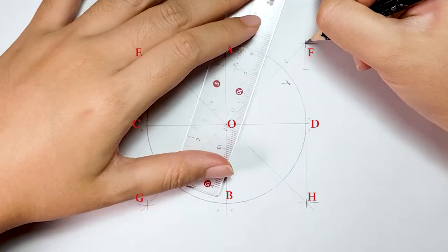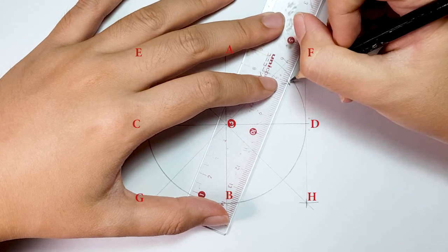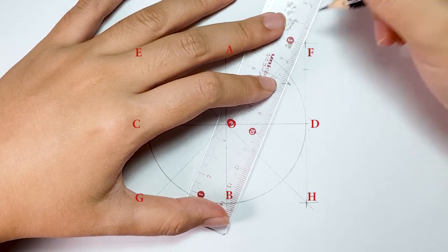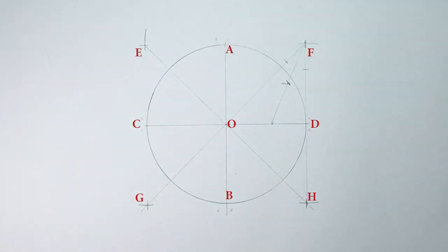Then, place your ruler at point F and bisector mark to draw a straight line that lands on line OD. This is the circle radius length where inside of the triangle. This point is called point 1.